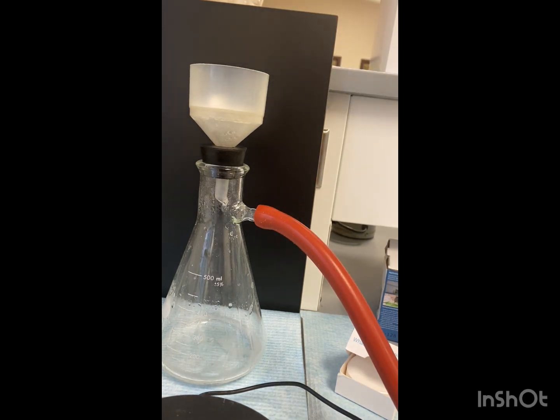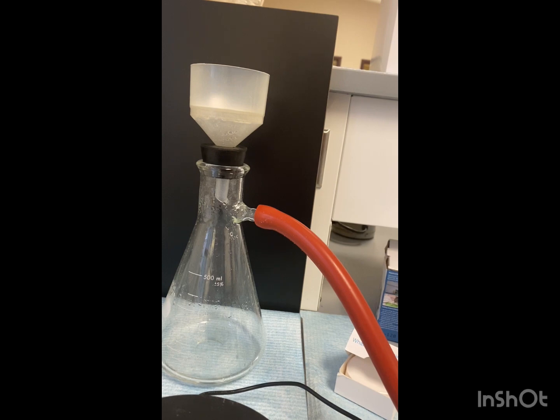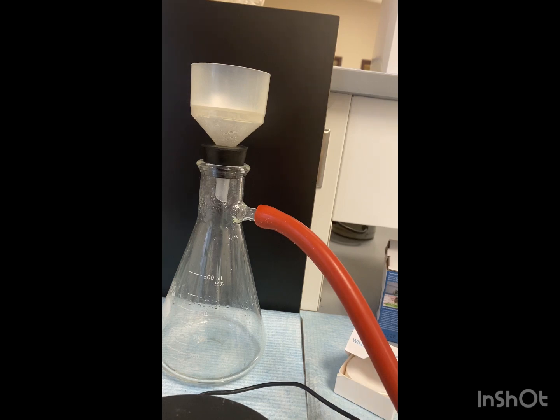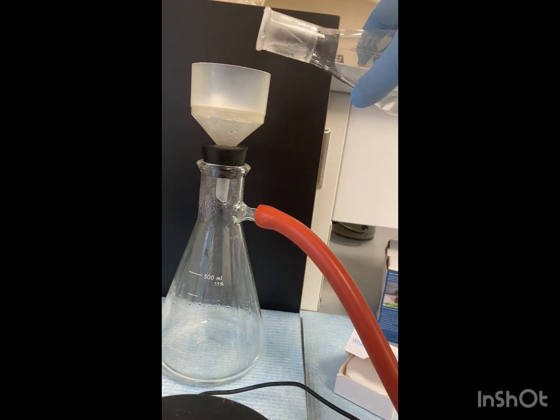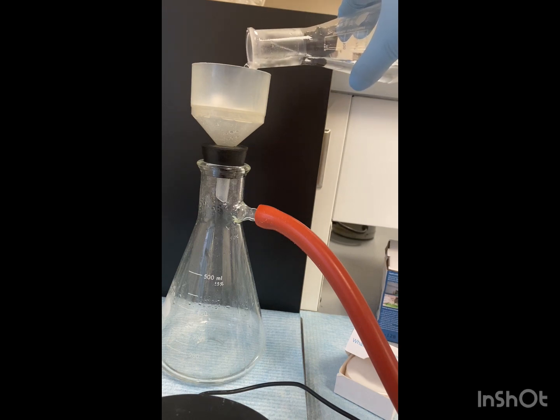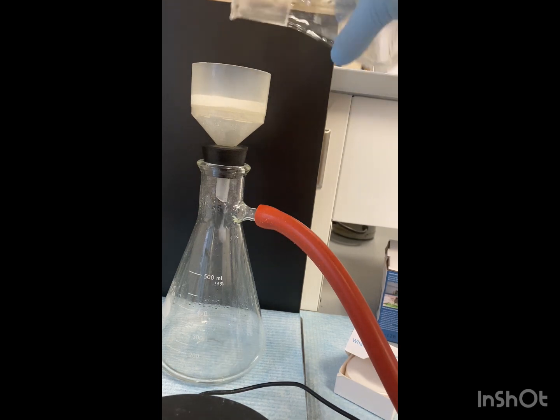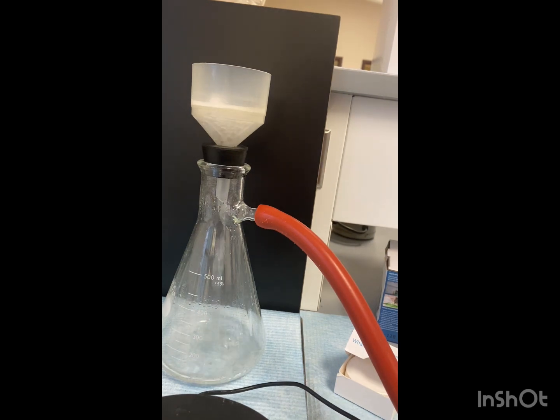We're going to use 20 mils of water to wash. Remember, we want to turn the vacuum off when we add our 20 mils just like we did with our acetone that we washed the first product with. So adding around 20 mils. Turn on the vacuum. And we're going to do that two more times.